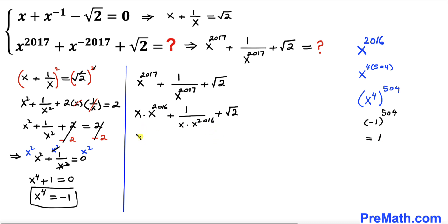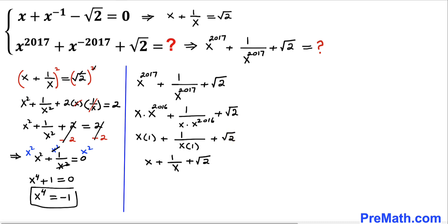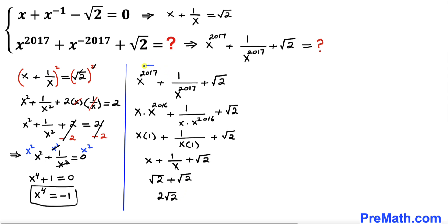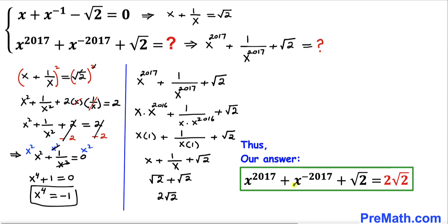Therefore we get x times 1 plus 1 divided by x times 1 plus square root of 2. We know that x plus 1 over x equals square root of 2 from the first equation, so this becomes square root of 2 plus square root of 2, which gives us 2 times square root of 2. Thus the value of x power 2017 plus x power negative 2017 plus square root of 2 turns out to be 2 times square root of 2. Thanks for watching and please subscribe to the channel for more videos!